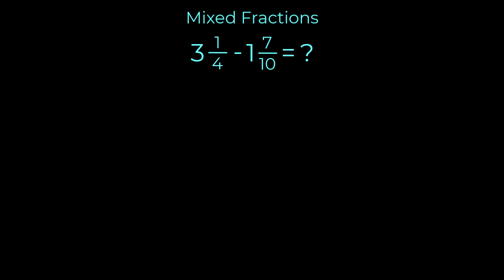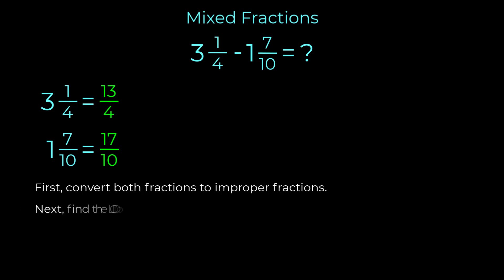Let's see how you did. Step one is to express both mixed fractions as improper fractions. Three and one quarter is equivalent to thirteen over four. One and seven tenths is equivalent to seventeen over ten. Step two is to find the least common denominator. The least common denominator between four and ten is twenty.